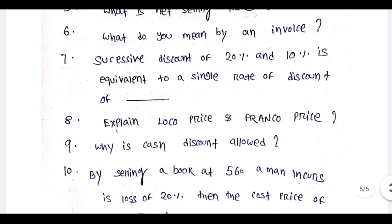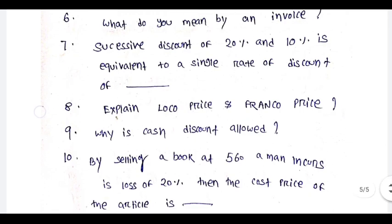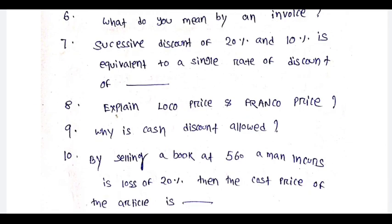This is a problematic chapter, so there is a little problem. It is about selling price, cost price, profit, loss — double profit, double discount. Successive discount of 20% and 10% is equivalent to a single rate of discount. Single liner, one liner question.